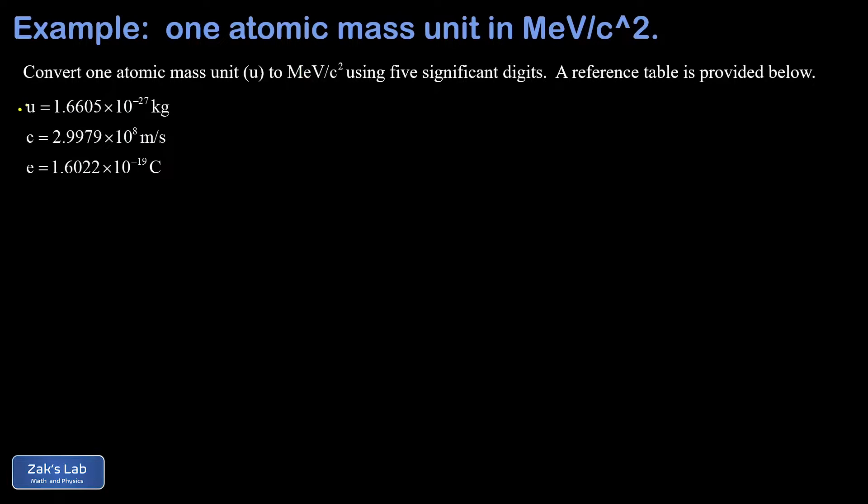We have one atomic mass unit listed in kilograms, the speed of light written in meters per second, and the elementary charge, in other words, the charge magnitude on an electron or a proton, given in coulombs.